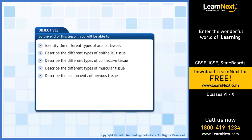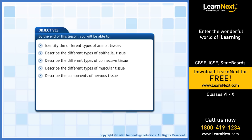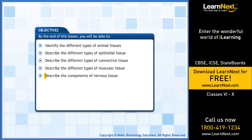By the end of this lesson, you will be able to: identify the different types of animal tissues; describe the different types of epithelial tissue; describe the different types of connective tissue; describe the different types of muscular tissue; and describe the components of nervous tissues.